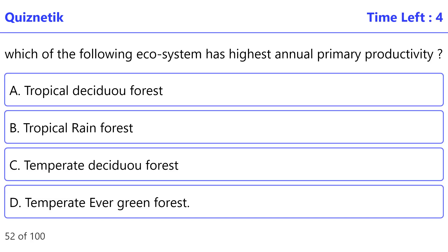Which of the following ecosystem has highest annual primary productivity? The correct option is B, tropical rainforest.